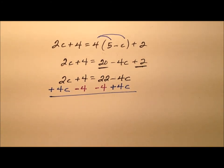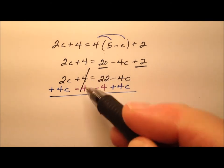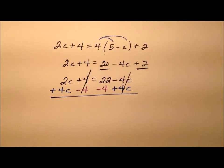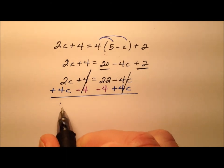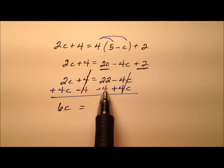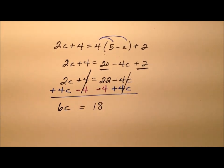So what happens then, on the left, we have these 4s cancel. And on the right, we have these variables cancel. And adding up all these like terms, it looks like 2c and 4c make 6c. So 6c equals 22 minus 4, which is 18.